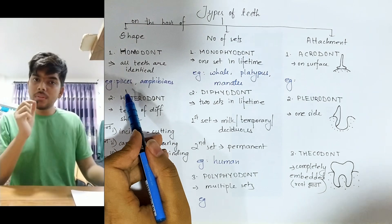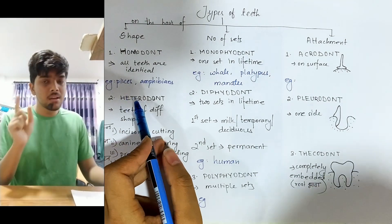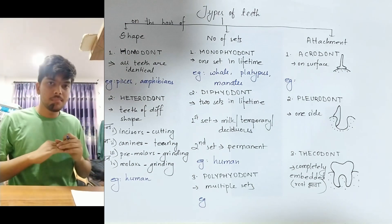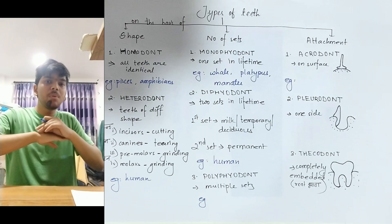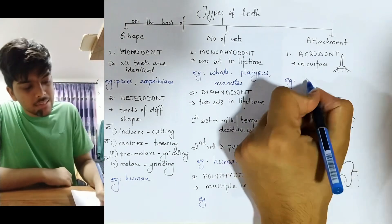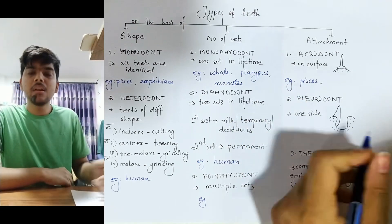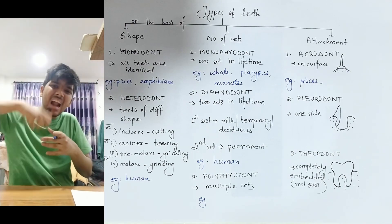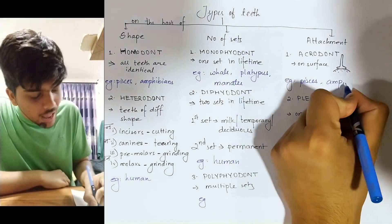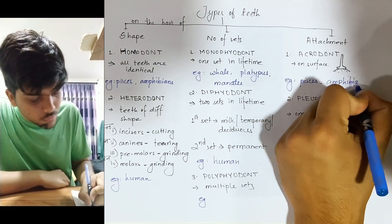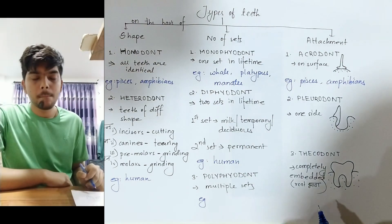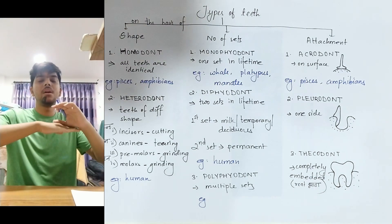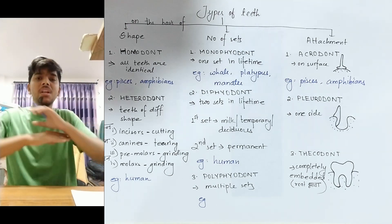When you look at teeth in Pisces, you will notice that all the teeth are simply surface-attached — acrodont teeth. So in Pisces, the teeth are acrodont, meaning they are directly attached to the surface of the jawbone.